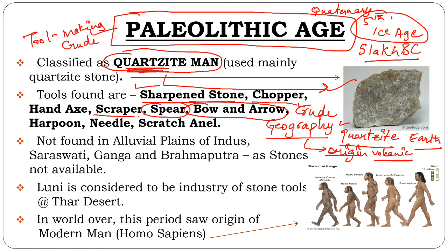The bow and arrow concept also existed but in very crude form. Tool-making techniques were very basic at first. From 5 lakh BC to around 10,000 BC, as evolution progressed over millions of years, man slowly learned — from that experience he made hand axes. Neolithic period needles were also made. Scrapers, bone tools — all these tools we have found belong to the Paleolithic Age.